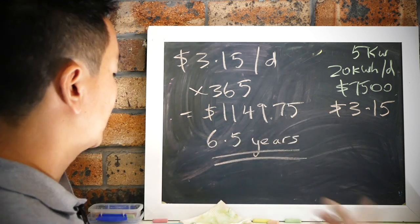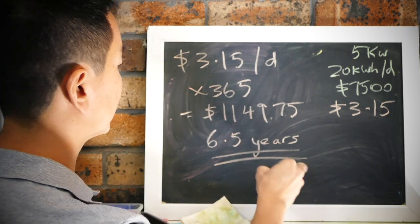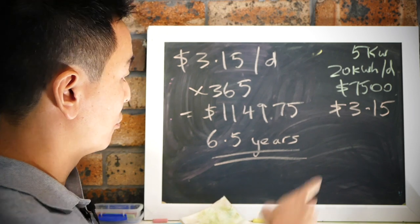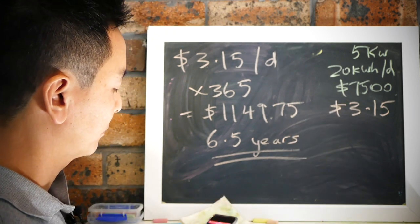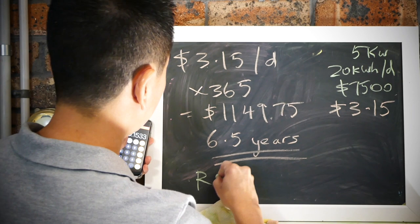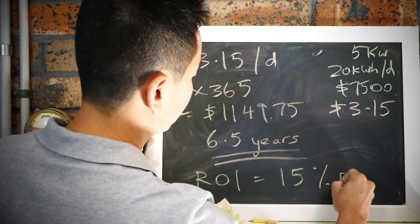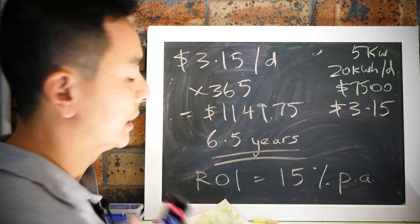So what's your return on investment? That's easy, one thousand one hundred forty nine seventy-five divided by the initial outlay seven thousand five hundred. So your return on investment is fifteen percent per annum after six and a half years.